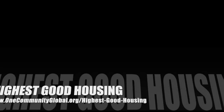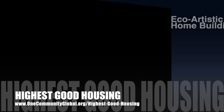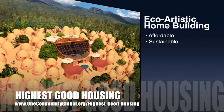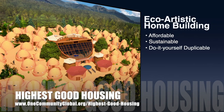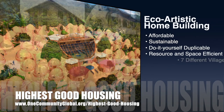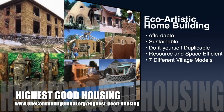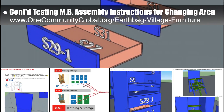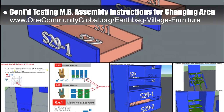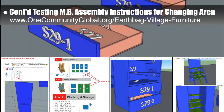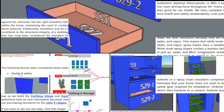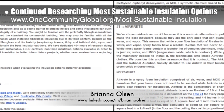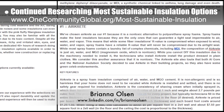The One Community approach to highest good housing is eco-artistic home building that is affordable, sustainable, do-it-yourself duplicable, resource and space efficient, and consists of seven different sustainably constructed village models. This week, the core team did another round of testing the Murphy bed assembly instructions for the changing area. What you see here are the errors we found. Brianna Olson, sustainability researcher, completed her fifth week researching the most sustainable insulation options.